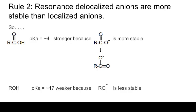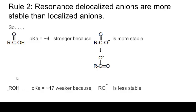Rule number two: resonance-delocalized anions are more stable than localized anions. Comparing a carboxylic acid with a pKa of about 4 to an alcohol with a pKa of about 17 — the carboxylic acid is about 10 to the 13th times stronger, roughly 10 trillion times stronger than alcohols. Why? Because if you take off the H+, the negative charge on the carboxylate oxygen can resonate into the other oxygen, as shown by two resonance structures. Whereas if you take off the H+ from an alcohol, the negative charge is stuck on that oxygen and can't resonate, making it much less stable. So the carboxylate anion is far more stable, and the carboxylic acid is far more acidic.